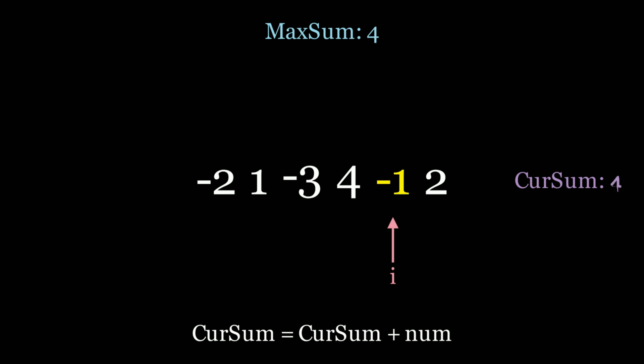Now we go on to the next element, which is negative 1. Cur sum is now 4 minus 1, which is 3. And we move on along because 3 is less than 4, which is the global max sum. We don't update anything.